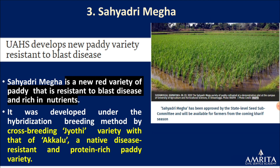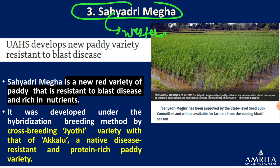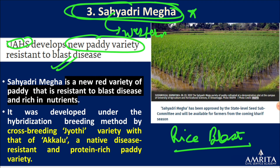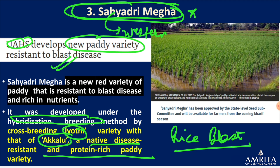Next is Sahayadri Mega. From the name, Sahayadri refers to the Western Ghats, but the name alone doesn't tell you what it is — so it becomes important. It's a new paddy variety developed by the University of Agriculture and Horticultural Sciences, resistant to blast disease. It's a hybrid of Jyoti — already in use — and Akula, a native disease-resistant, protein-rich paddy variety.